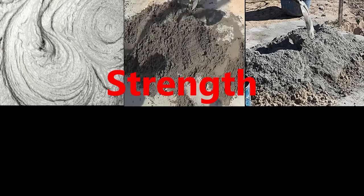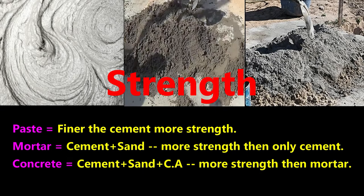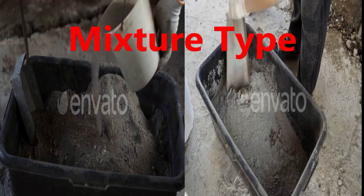Next, strength. Cement paste has more strength when the cement is finer. But finer cement plus sand, i.e. fine aggregate, gives more strength than cement paste alone. So mortar is stronger than cement paste. Finer cement, sand, and coarse aggregate with admixtures gives still more strength than mortar. So concrete is stronger than both mortar and cement paste.